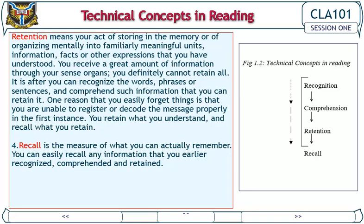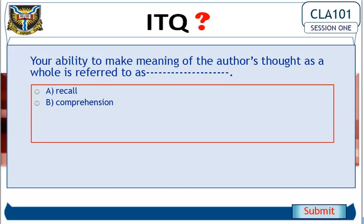Retention means your act of storing in the memory, or organizing mentally into familiarly meaningful units, information, facts, or other expressions that you have understood. You receive a great amount of information through your sense organs, but you definitely cannot retain all of it. It is after you can recognize the words, phrases, or sentences and comprehend such information that you can retain it. One reason that you easily forget things is that you are unable to register or decode the message properly in the first instance. You retain what you understand and recall what you retain. Recall is the measure of what you can actually remember. You can easily recall any information that you earlier recognized, comprehended, and retained.